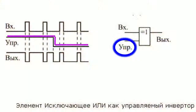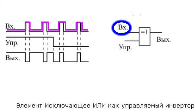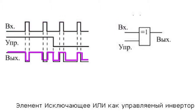An important application for exclusive OR gates is a controllable inverter. In this case, one of the gate's inputs is used as the controlling input, and the other input receives the data signal. If the controlling input returns a 1, the input signal is inverted; otherwise it is not.